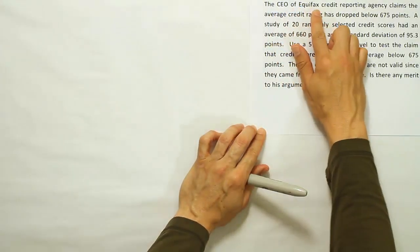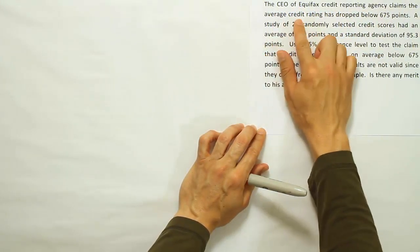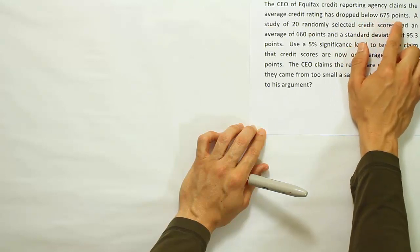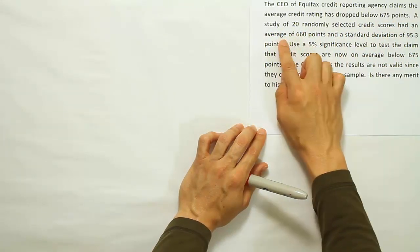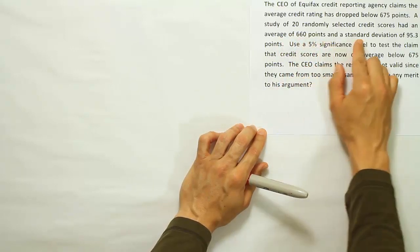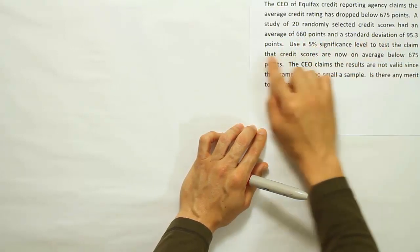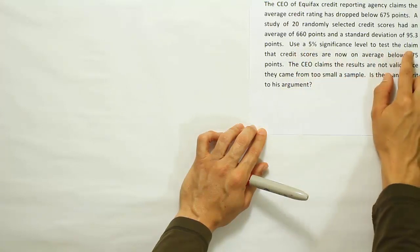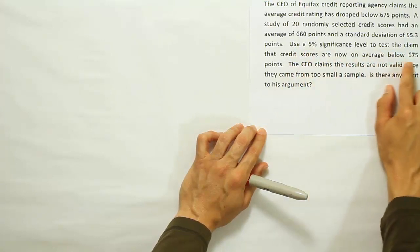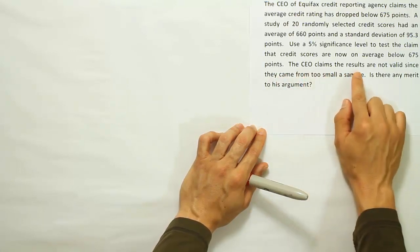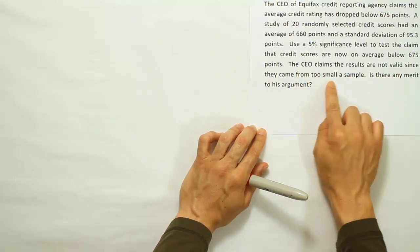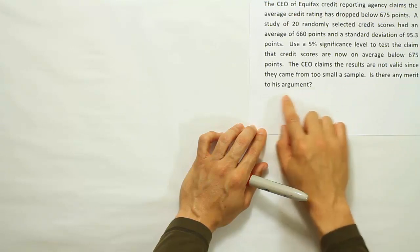The CEO of Equifax Credit Reporting Agency claims the average credit rating has dropped below 675 points. A study of 20 randomly selected credit scores had an average of 660 points and a standard deviation of 95.3 points. Use a 5% significance level to test the claim that the credit scores are now on average below 675 points. The CEO claims the results are not valid since they came from too small a sample. Is there any merit to his argument?